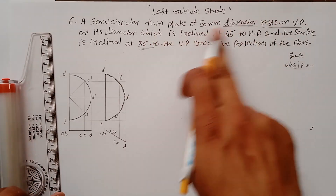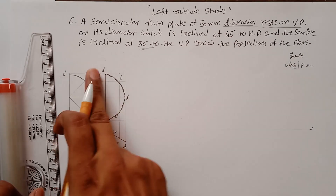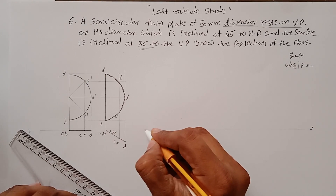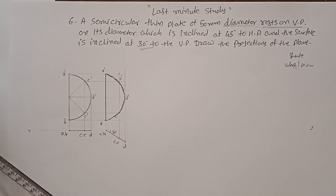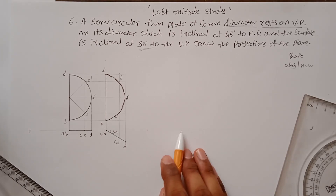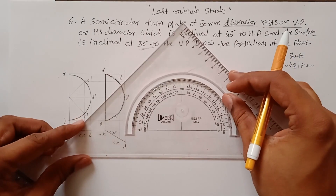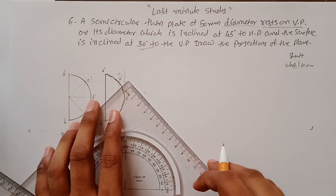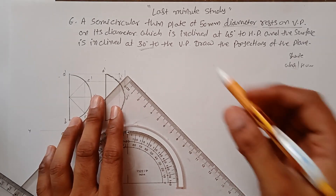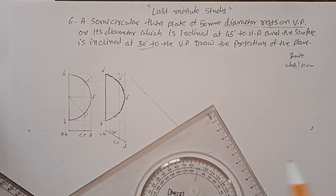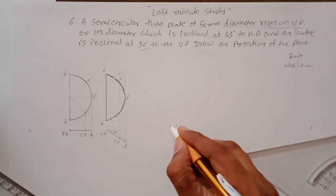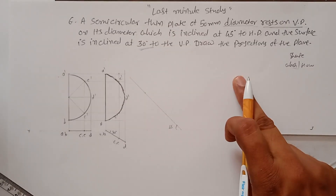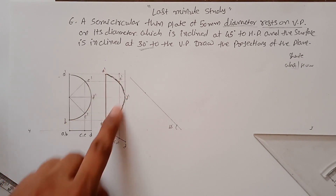The diameter is now inclined at 45 degrees with the HP — currently at 90 degrees, so we need to bring it to 45 degrees. At a suitable distance, measure an angle of 45 degrees and draw a line in that direction. This line can also be drawn on the other side if needed.